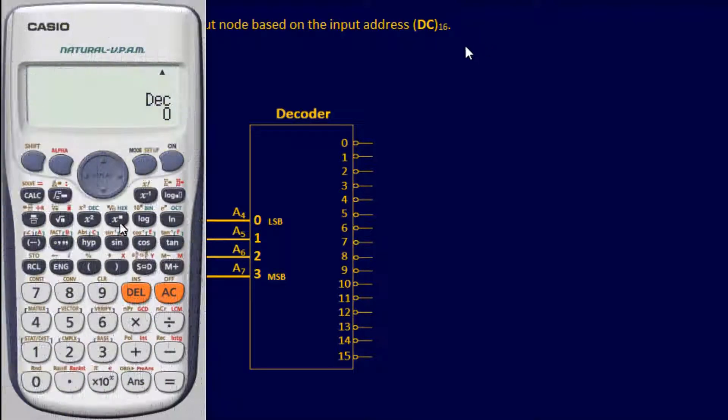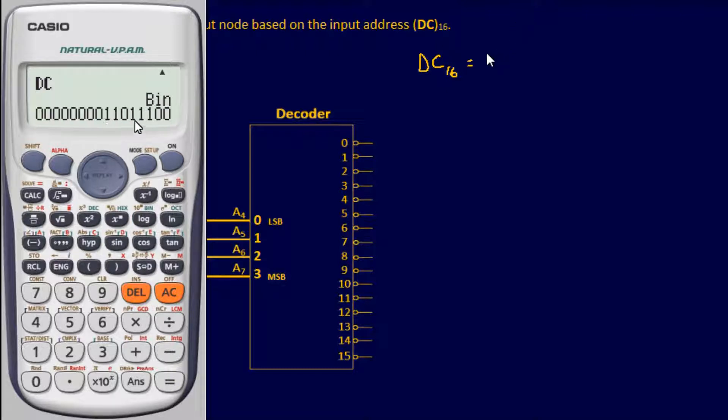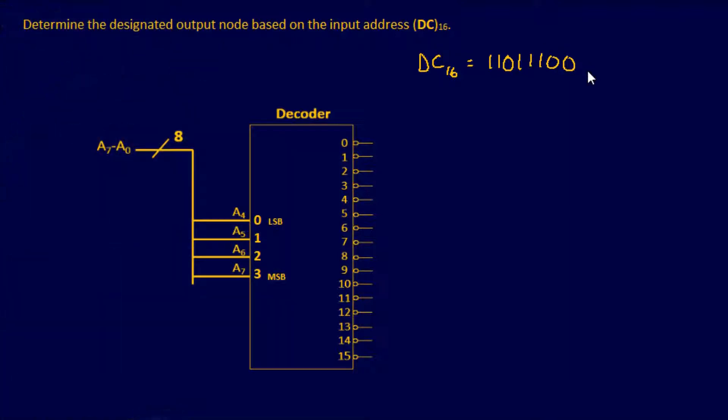Well, the good news is about your calculator is you can actually plug and chug DC, which is base 16, to a binary format, which is your base 2. And just using a calculator function, it'll give you 11011100. And that is in that base 2 format.